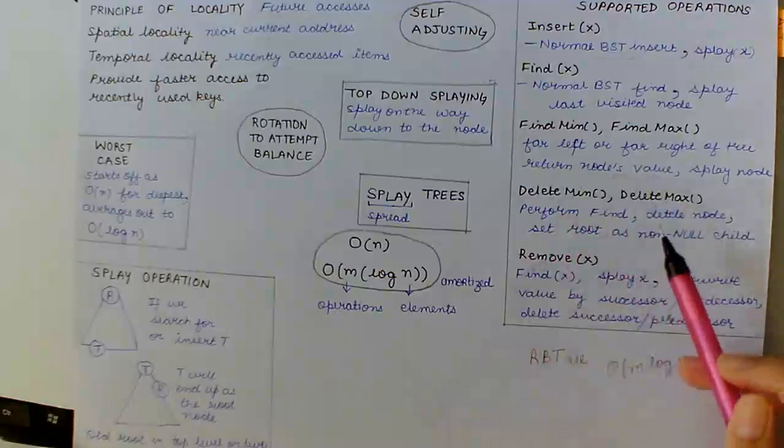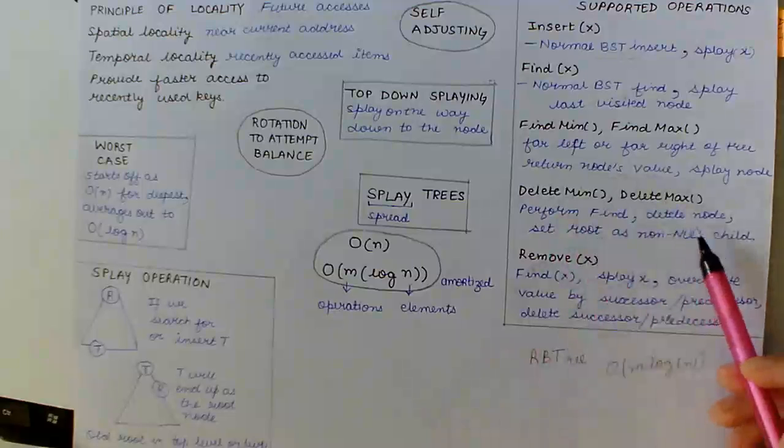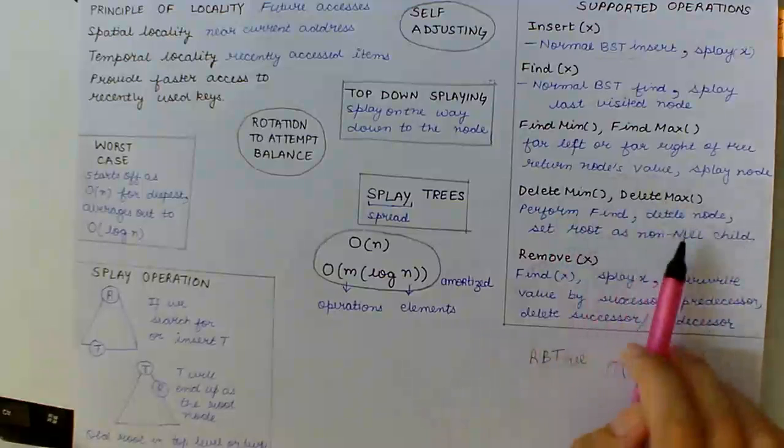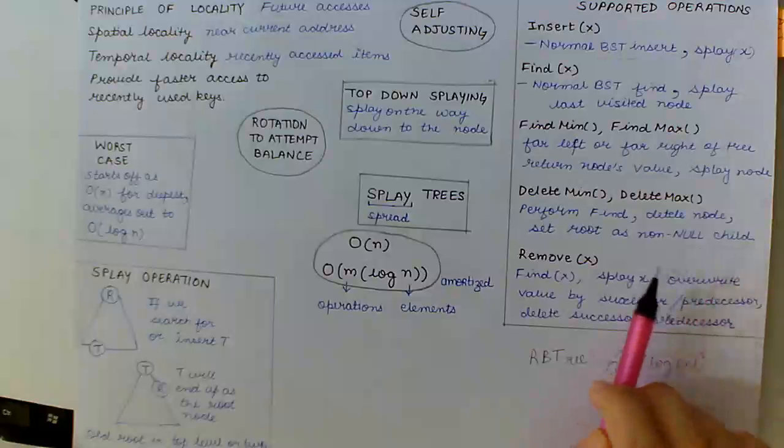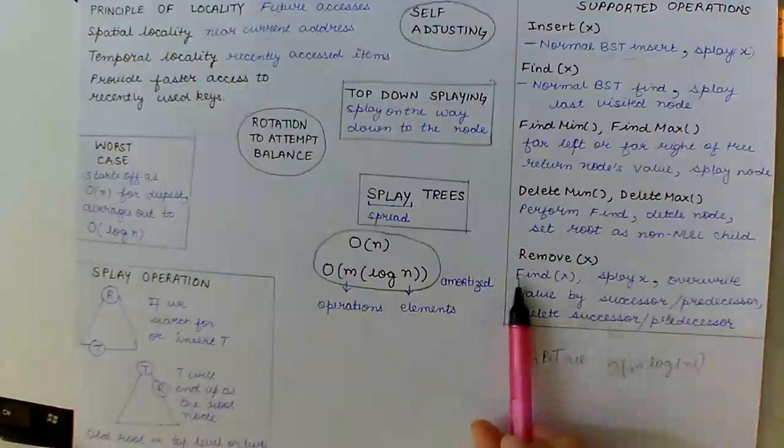Now, moving on to delete min and delete max. We perform find minimum and find maximum which place the minimum or maximum to the root and then delete that node. And set the root to be the non-null child of the minimum or maximum which we have found.